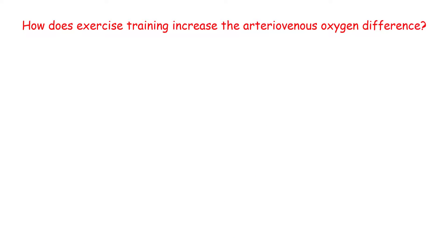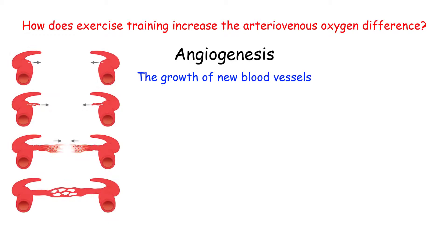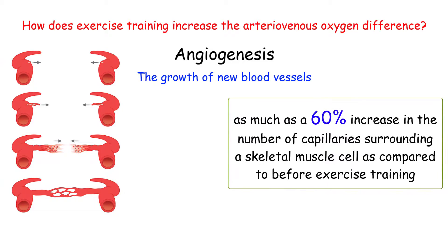How does exercise training increase the arteriovenous oxygen difference? In a similar manner as just described for the myocardium, but for skeletal muscle instead, the increase in the difference in arterial versus venous oxygen content largely results from angiogenesis — the growth of new blood vessels. In some instances, there can be as much as a 60% increase in the number of capillaries surrounding a skeletal muscle cell compared to before exercise training.